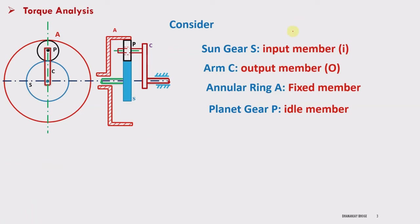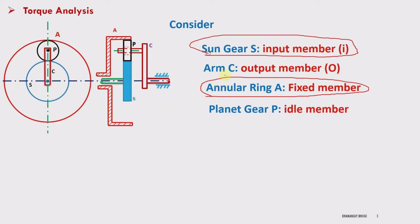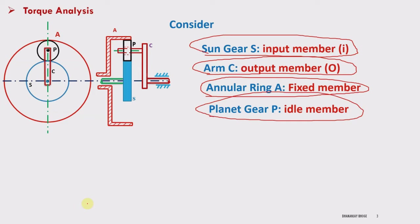We will assume that internal gear A is fixed — you can fix any one of the members. So internal ring gear A is fixed, sun gear is the input member, output is taken at the arm, so arm C is the output member, planet P is the idle member. So: sun is the input, arm is the output, P is the idle gear, and annular ring A is fixed.